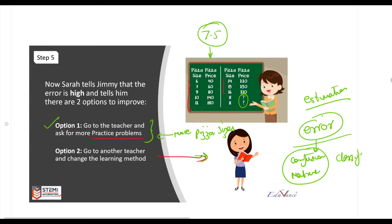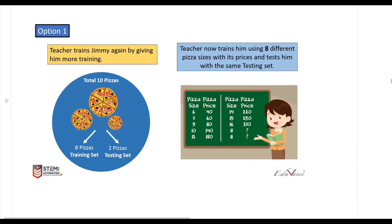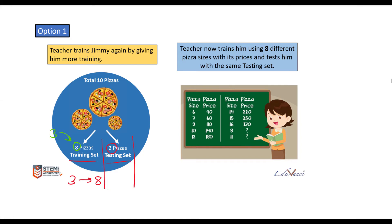Let us see what happens with the first option. He goes back to his teacher and asks her: 'Can you please give me more pizza sizes to learn?' So that's what she does — instead of three pizzas previously, she now teaches him with eight pizza sizes, which is now his training set. His training set increased from three to eight, and his testing set is still maintained at two.